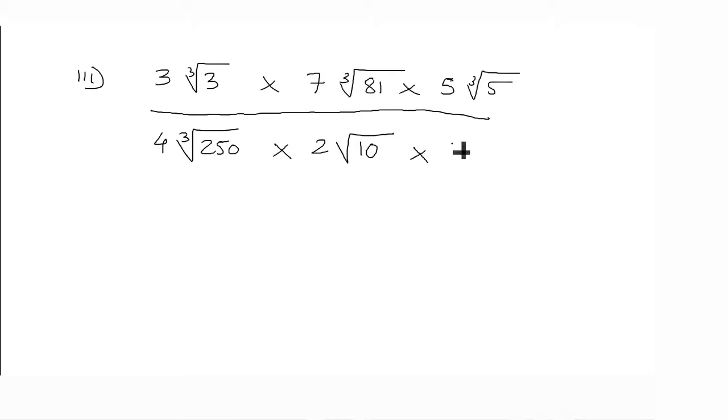Let us take a third example. 3 into cube root of 3 plus 7 into cube root of 81 plus 5 into cube root of 5, whole upon 4 into cube root of 250, 2 into square root of 10, 35 into cube root of 243. First step will be to separate all the rational terms and combine them. So 3 into 7 into 5 upon 4 into 2 into 35. And after irrational terms ko mein unke order ke hisaab se combine dunga. So cube root of 3 into 81 into 5 upon cube root of 250 into 243.